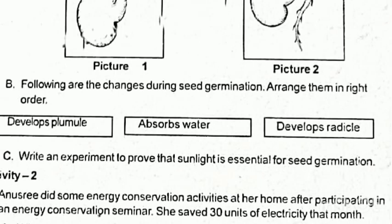Following are the changes during seed germination — arrange them in the right order. Now you can see the seed germinate. It will make the seed germinate.